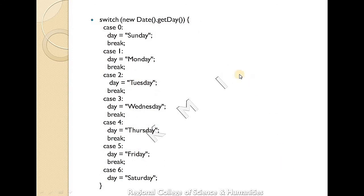Here is an example: switch on new Date().getDay(). Case 0 is Sunday, case 1 is Monday, Tuesday, Wednesday, Thursday, Friday, Saturday. So these are the four types of conditional statements: if statement, if-else, if-else-if, and switch-case statements. Thank you.